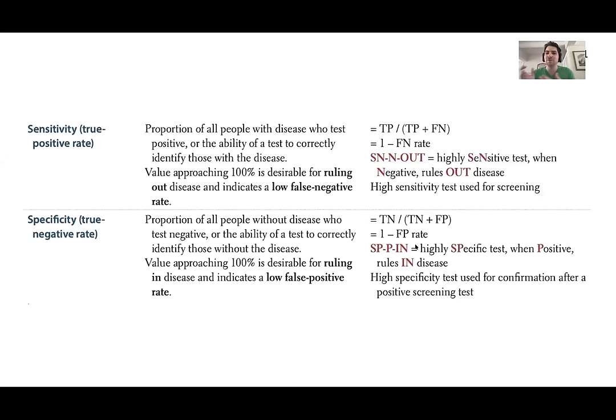So the first test — your screening test — wants to be highly sensitive to make sure you catch all the people with the disease. Then you move to a more specific test to rule out anyone that tested positive falsely.